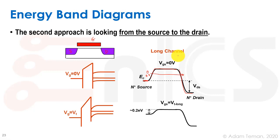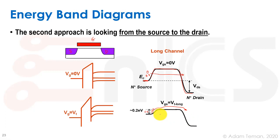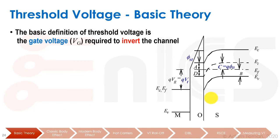Once we apply voltage and get into inversion, another way to look at inversion is that our potential barrier goes way down. VGS becomes some sort of VT for a long channel transistor, and the potential barrier drops to only 0.2 electron volts difference from the energy of the source. When the barrier is that low, electrons can easily cross from source to drain, and as long as we have a voltage difference between source and drain, we have conduction.